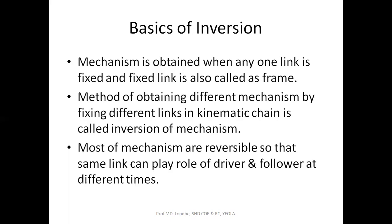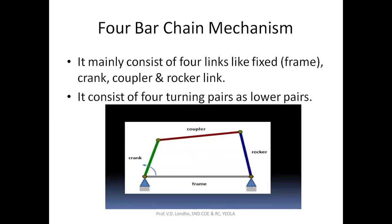In this inversion, either of the links will have input or output depending upon the configuration of the mechanism. This is a 4-bar chain mechanism — the name itself indicates there will be 4 links. One link is the fixed link, also called the frame. The second link is the crank, which has total rotary motion. The third link is the coupler, which has oscillating motion. The last link is the rocker, also called the output link, which also has oscillating motion. The basic configuration of this 4-bar chain mechanism is to convert rotary motion into oscillating motion.